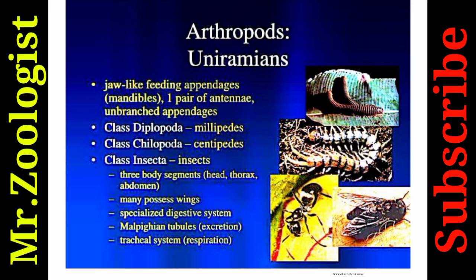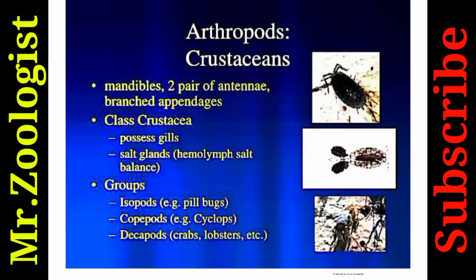Uniramia have jaw-like feeding appendages called mandibles and one pair of antennae with unbranched appendages. Class Diplopoda includes millipedes; Class Chilopoda includes centipedes. Class Insecta — insects — have three body segments (head, thorax, abdomen), many possess wings, a specialized digestive system, Malpighian tubules for excretion, and a tracheal system for respiration. Class Crustacea possess gills, salt glands, hemolymph for salt balance; groups include isopods (pill bugs), copepods (Cyclops), and decapods (crabs, lobsters).